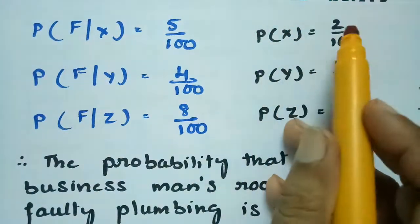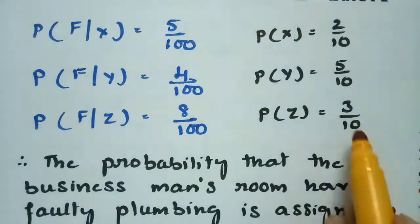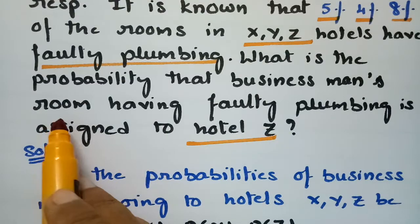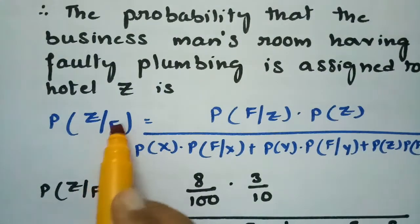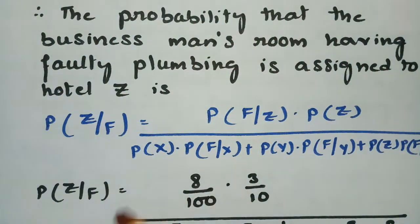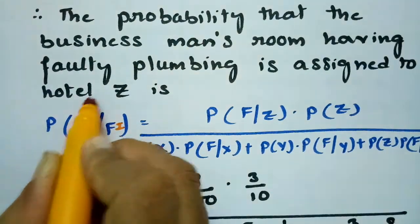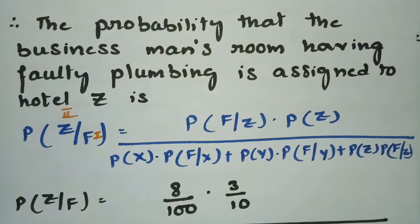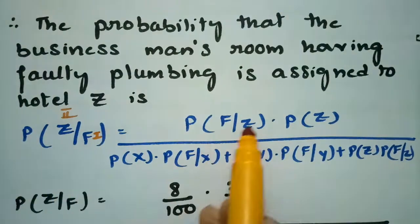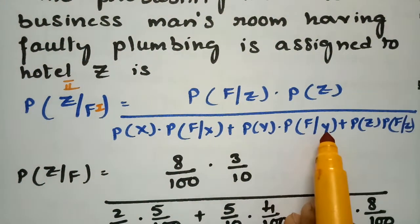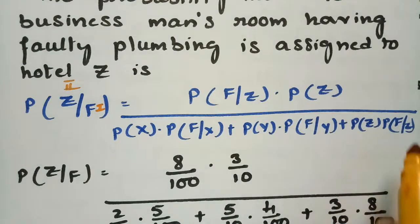So all six values are ready. The businessman spending in hotel X is 2 by 10, hotel Y is 5 by 10, and hotel Z is 3 by 10. The question asks for the probability that the businessman's room having faulty plumbing is from hotel Z. This is P(Z|F), and using Bayes' theorem we reciprocate: P(F|Z) × P(Z) divided by P(X)×P(F|X) + P(Y)×P(F|Y) + P(Z)×P(F|Z).